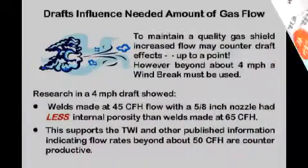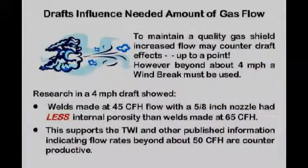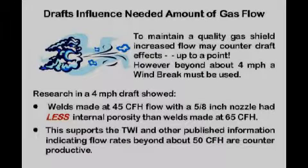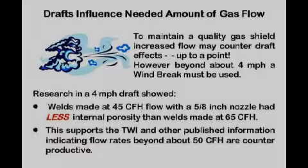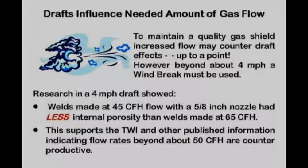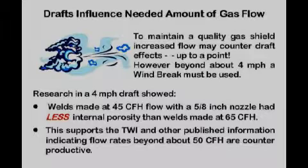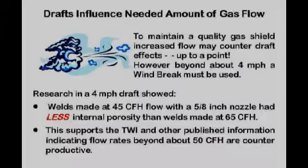Tests made to see how much flow could help counter drafts showed that in a 4 mile-per-hour draft, 45 CFH gave less internal porosity than 65 CFH. This validated the Welding Institute and other published information defining about 50 CFH as the approximate maximum allowable flow. If the draft exceeds 4 miles per hour, a windbreak should be used.